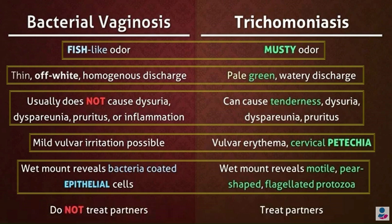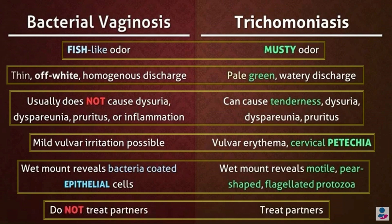In bacterial vaginosis, the wet mount reveals bacteria-coated epithelial cells, whereas in trichomoniasis the wet mount reveals motile pear-shaped flagellated protozoa. There is no need to treat the partner in case of bacterial vaginosis, but we need to treat the partner in case of trichomoniasis.